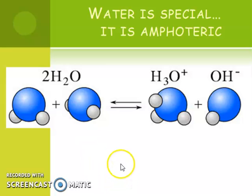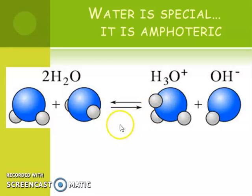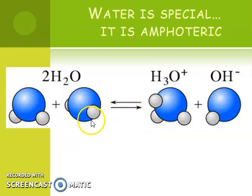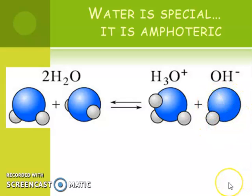One last thing before we discuss strengths of acids and bases: water is amphoteric. In a beaker of pure water, molecules are constantly switching between different ionic forms. Water barely produces an electrolyte on its own, but it does produce some. One water molecule snatches an H off another, making H₃O⁺ and leaving OH⁻, showing how water can act as either an acid or a base.